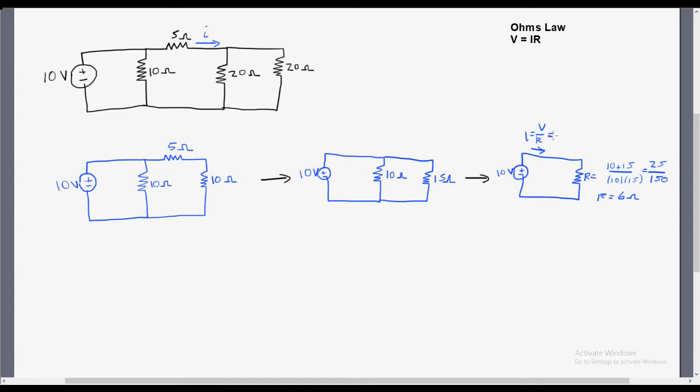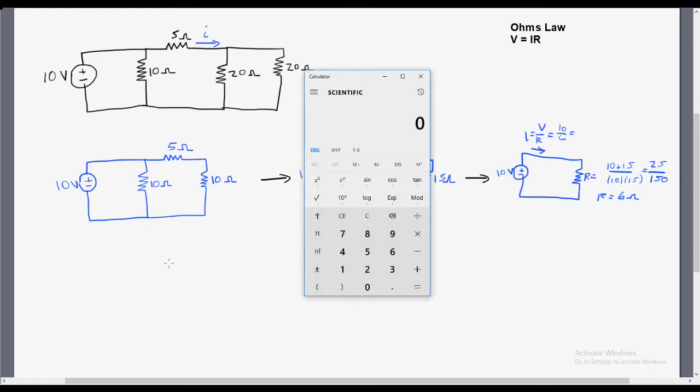Now with our reduced circuit all the way on the right, we can figure out what is the current going through that simple loop with a voltage source and a resistor. Just double-checking my math here, I get 1.67 amps going through the voltage source and the resistor.